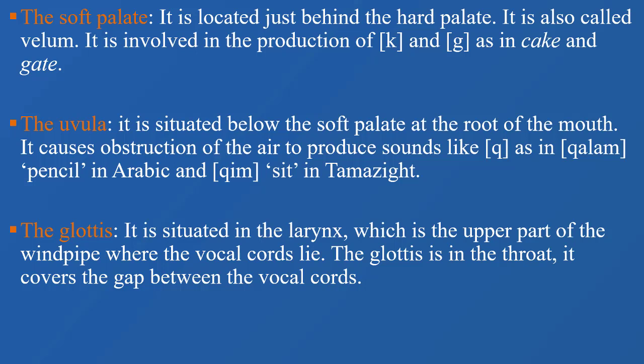Then we have the uvula, which is situated below the soft palate. Going from the front of the mouth to the back, the soft palate is at the roof of the mouth and causes obstruction of the air to produce sounds like the Arabic 'q' as in 'qalam' (pencil) and in Tamazight Berber as well.